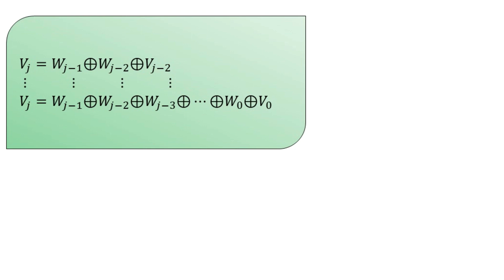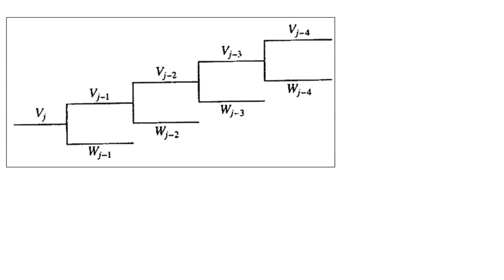The schematic representation shows: V_j divides into V_{j−1} and W_{j−1}; V_{j−1} further decomposes into V_{j−2} and W_{j−2}; V_{j−2} into V_{j−3} and W_{j−3}; and so on down to V_{j−4} and W_{j−4}. This tree diagram summarizes our topic on the orthogonality of the Haar scaling function and Haar wavelet function.